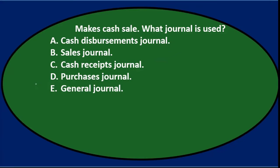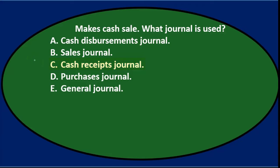Next question: makes cash sale — what journal is used? A. Cash disbursements journal. B. Sales journal. C. Cash receipts journal. D. Purchases journal. Or E. The general journal.